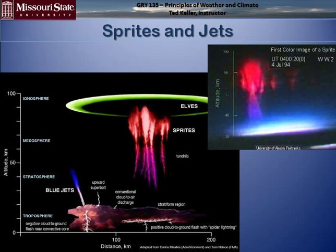We have sprites and blue jets — all electrical phenomena that emanate from the tops of thunderstorms and go all the way up into the ionosphere.